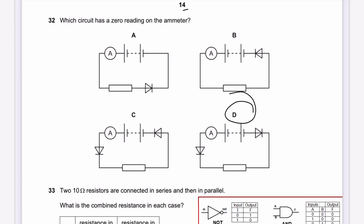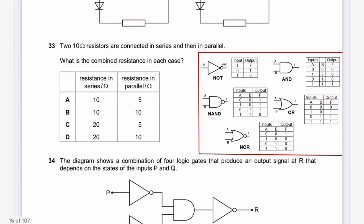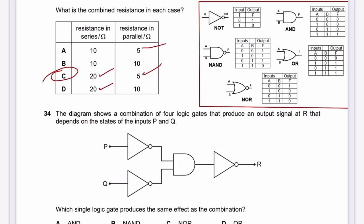Question 33: Two 10-ohm resistors are connected first in series, then in parallel. In series, total resistance is greater than any individual resistor — more than 10 Ω. In parallel, total resistance is less than any individual resistor — less than 10 Ω. No calculation needed; series gives more than 10 Ω, parallel gives less than 10 Ω.